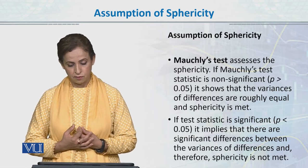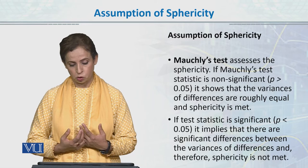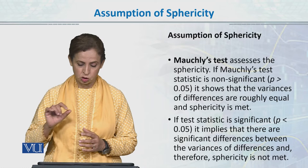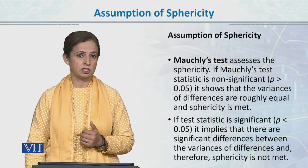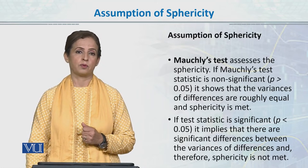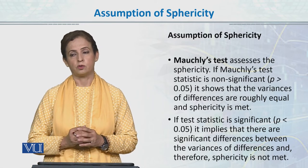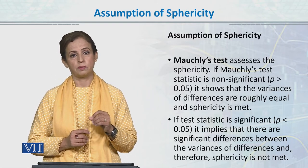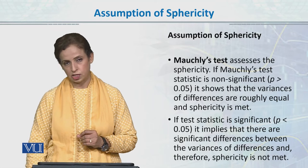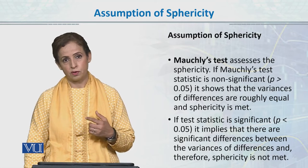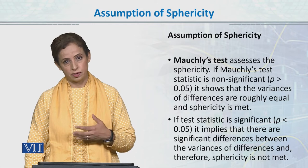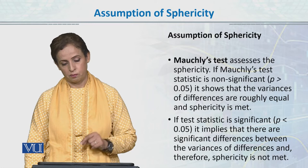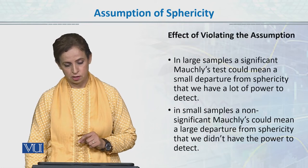If the test statistic is significant — यानि अगर value 0.05 से छोटी आ जाए — it implies that there are significant differences between the variances in each pair, तो sphericity की assumption meet नहीं होती। लेकिन जैसा कि ANOVA एक very robust test है, अगर sphericity assumption meet नहीं हो तो हम Greenhouse-Geisser की value report करते हैं, जो मैं आपको repeated measures ANOVA run करते वक्त दिखाऊंगा।